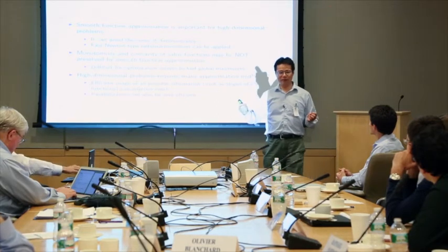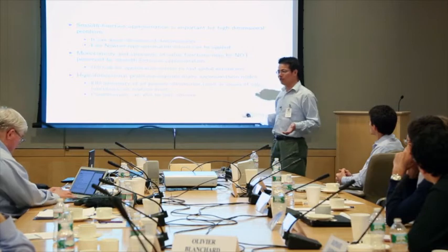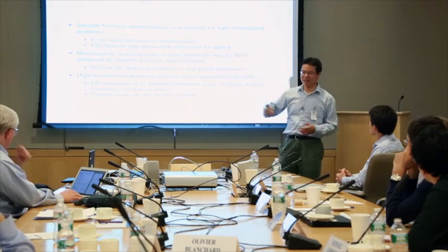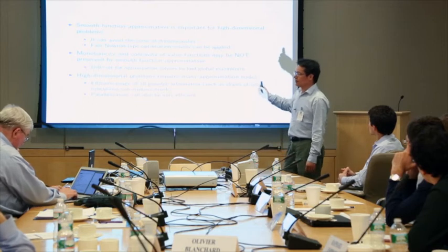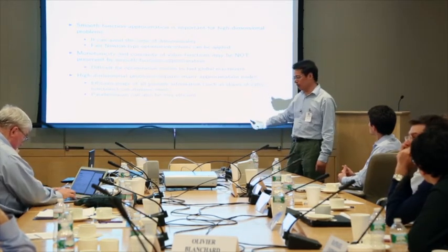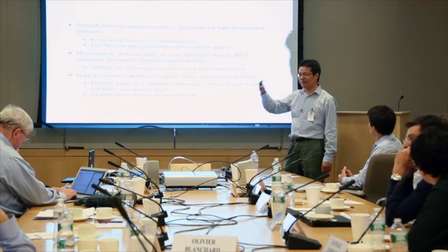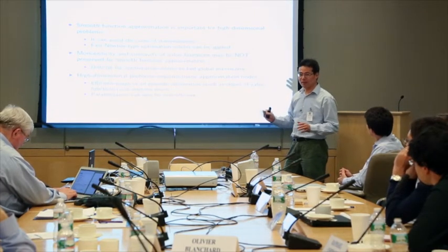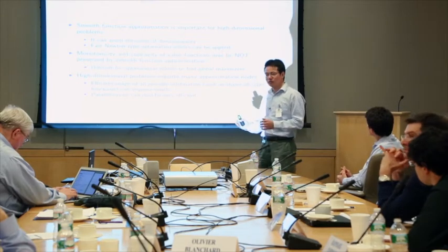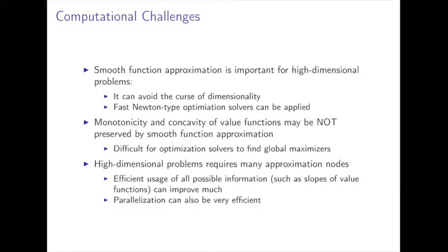Since we are using smooth polynomial functions, the polynomials don't inherently have concavity or monotonicity — we are not sure they can preserve those properties. If the shape is not preserved, then the objective function in the optimization problem may not be convex or concave. If it's not a convex optimization problem, then the optimization solver has to find the global optimum, which is a very hard problem, so you should be careful.